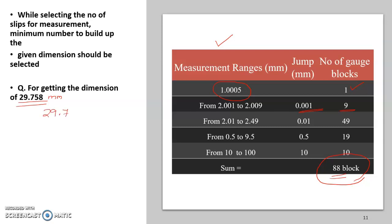So the smallest will be, we know that we have to take from the second range and that is started from 2 and we can have 0.008. So this will be our first gauge and we have to deduct it from our required dimension. Then it will be 27.75.